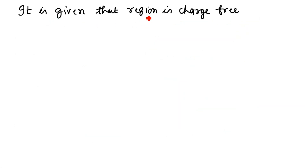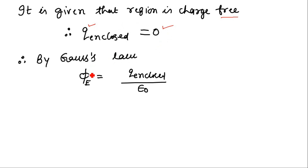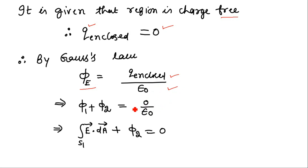It is given that the region is free of charge. Therefore the total charge enclosed by the closed surface composed of S1 and S2 is zero. According to Gauss's law, the net electric flux through a closed surface equals the enclosed charge divided by ε₀. Since the enclosed charge is zero, the net flux is zero, which equals the sum of φ1 and φ2.